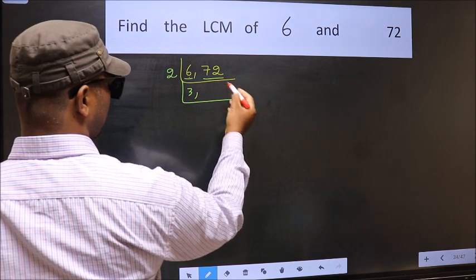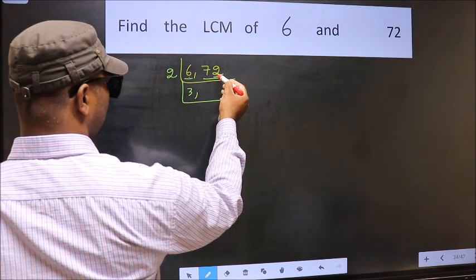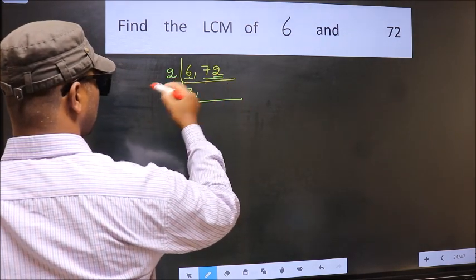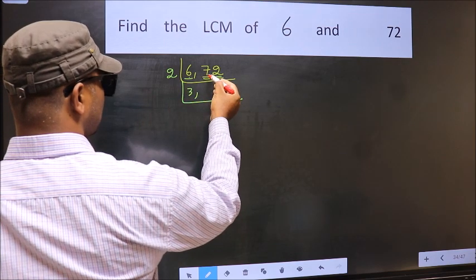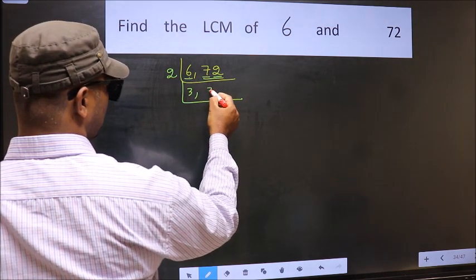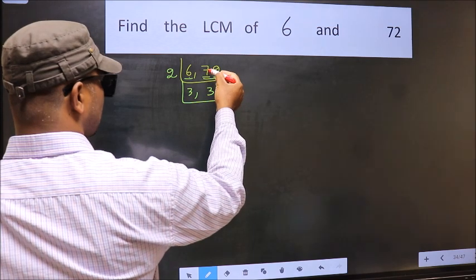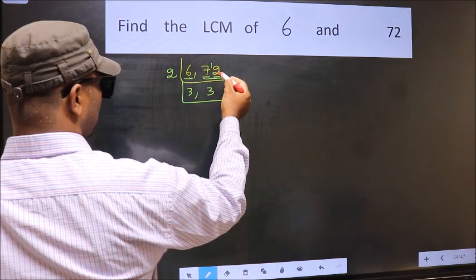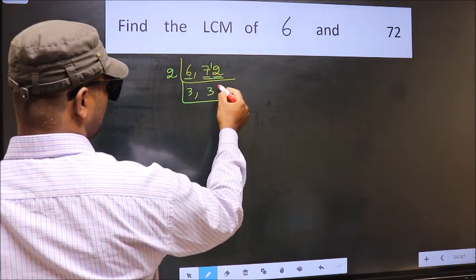Now the other number, 72. Last digit 2, even, so this number is divisible by 2. First digit 7. The number close to 7 in the 2 table is 6 (2 times 3). 7 minus 6 is 1, carried forward makes 12. When do we get 12 in the 2 table? 2 times 6 is 12.